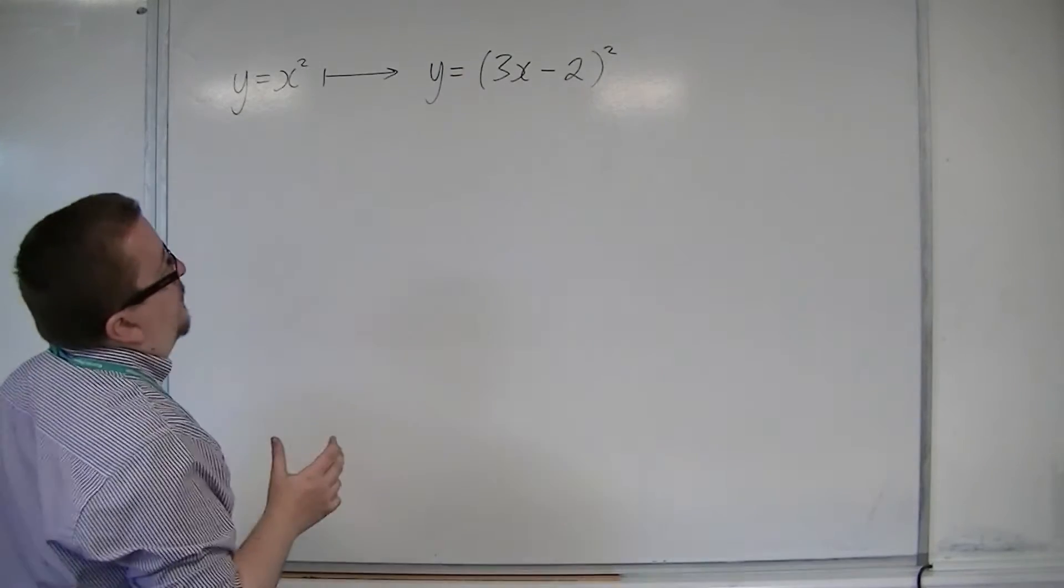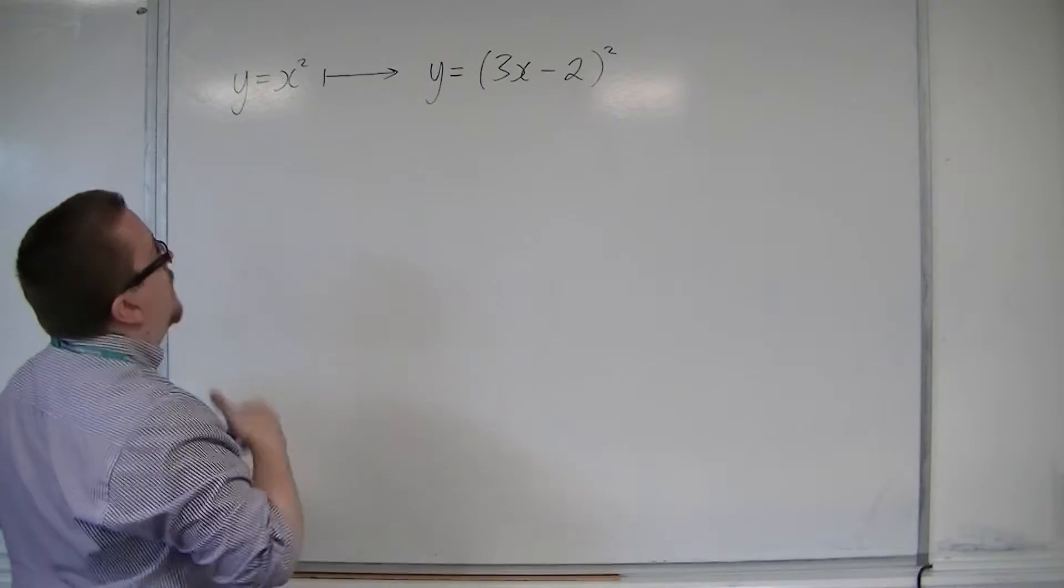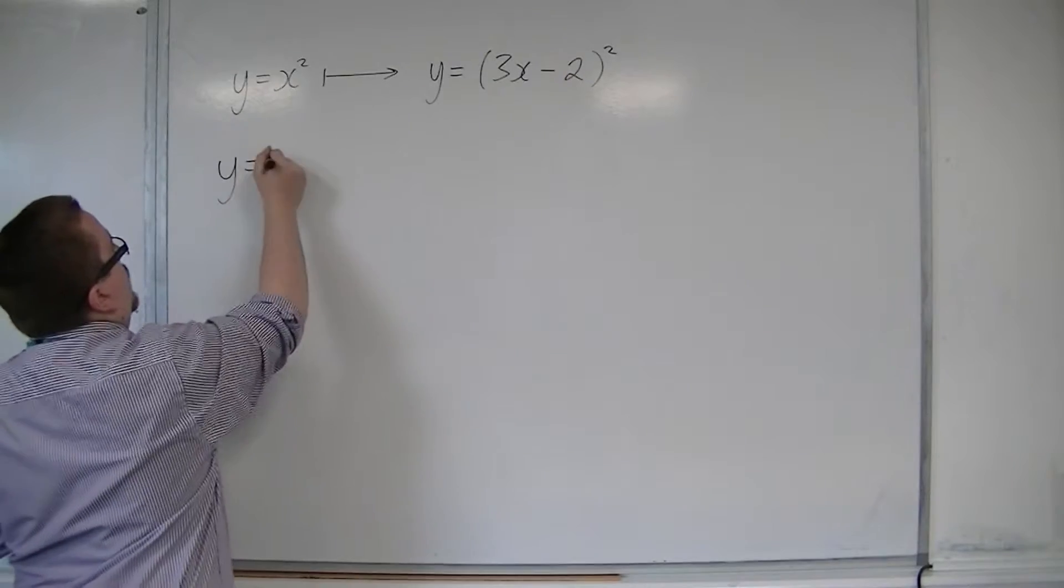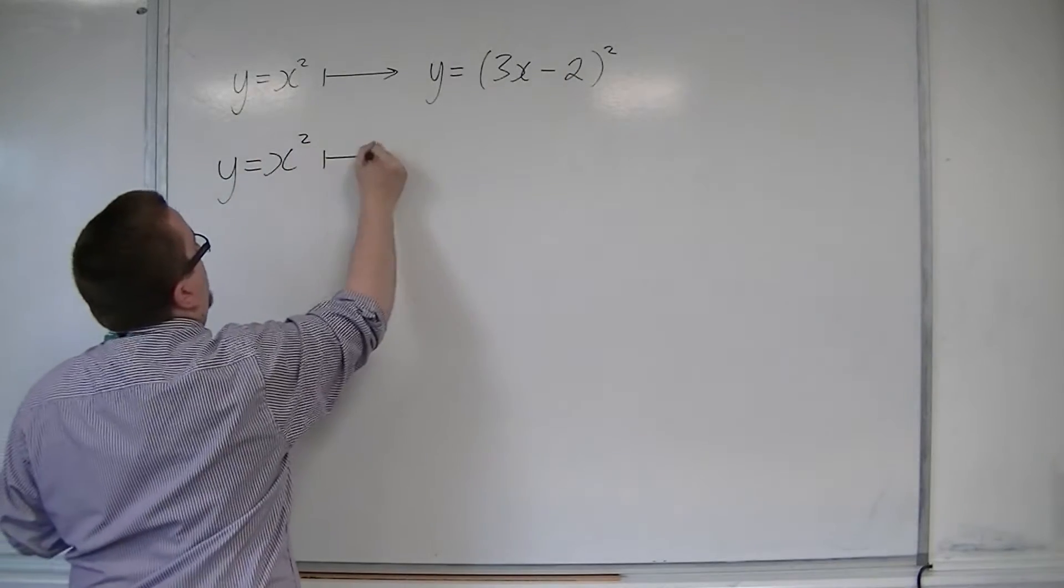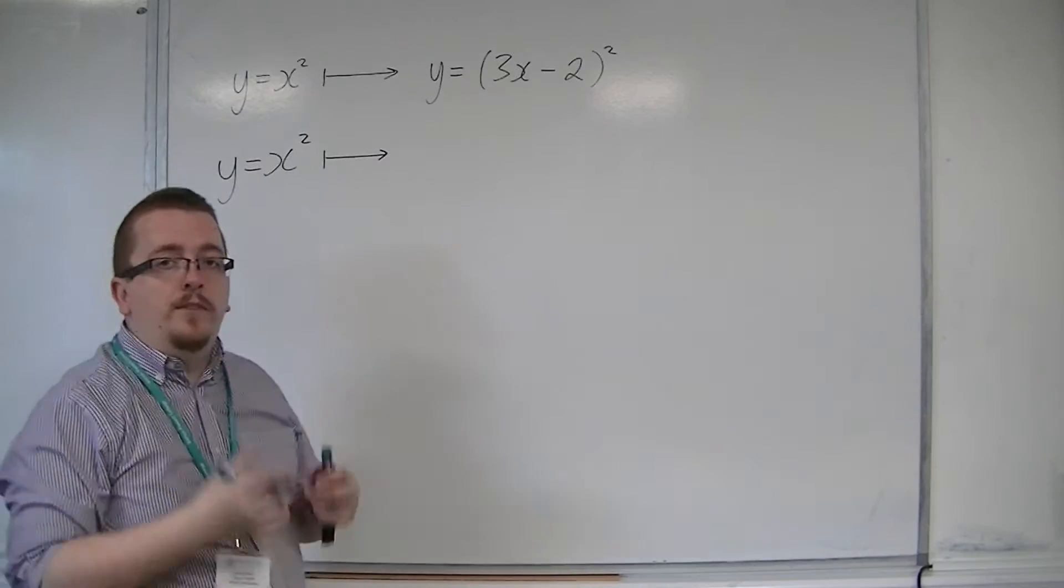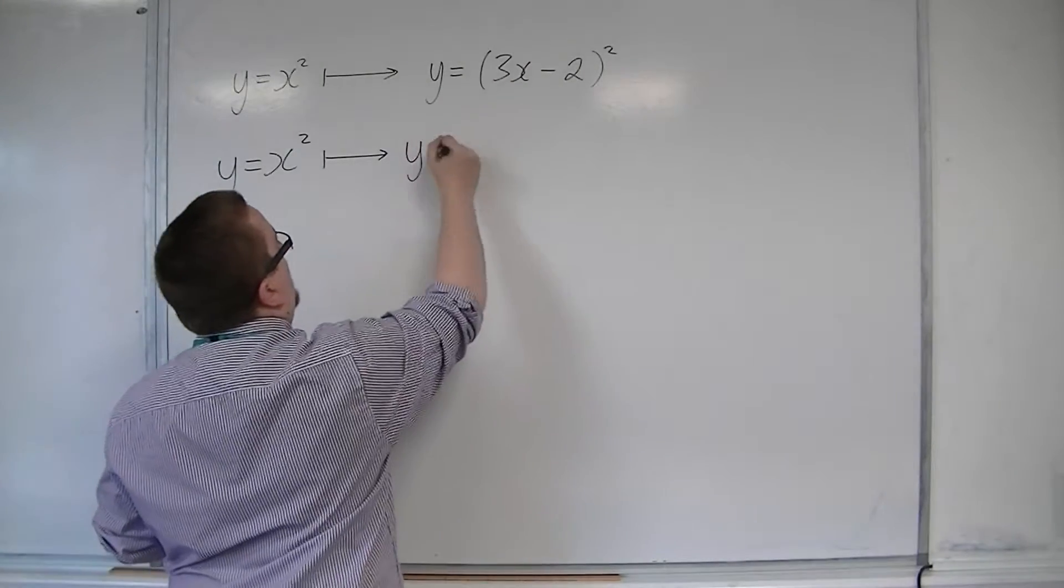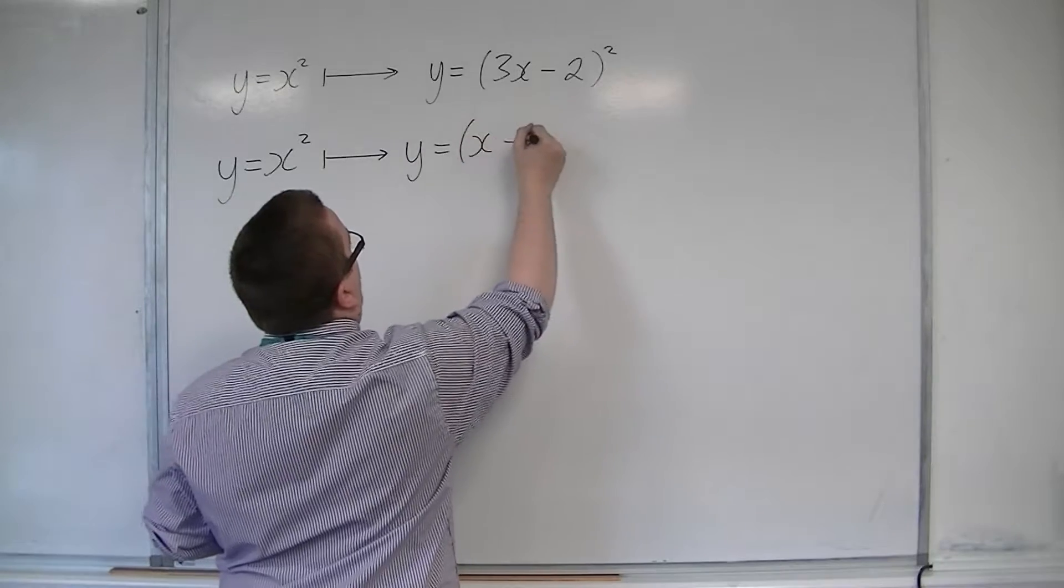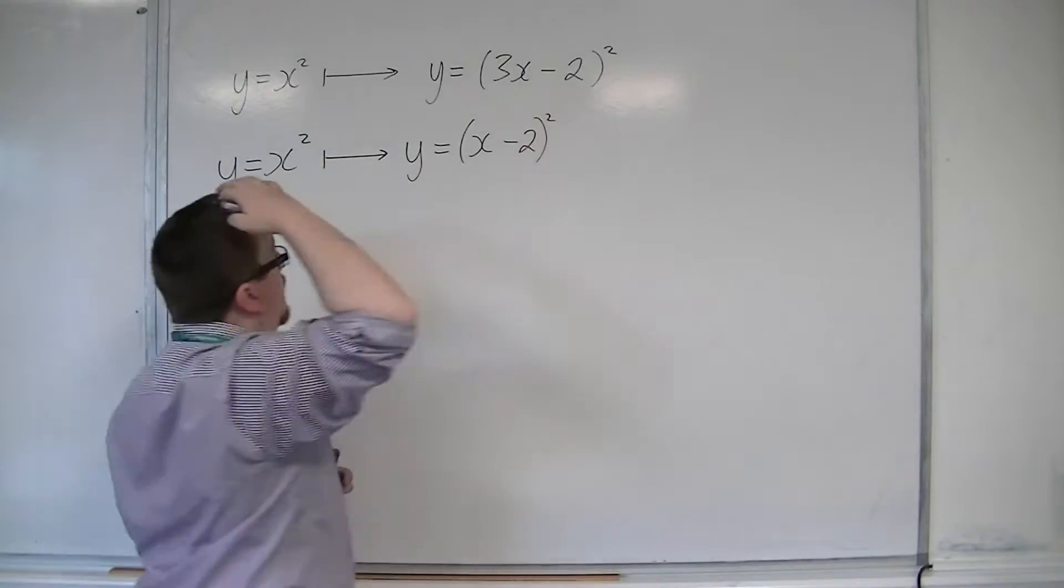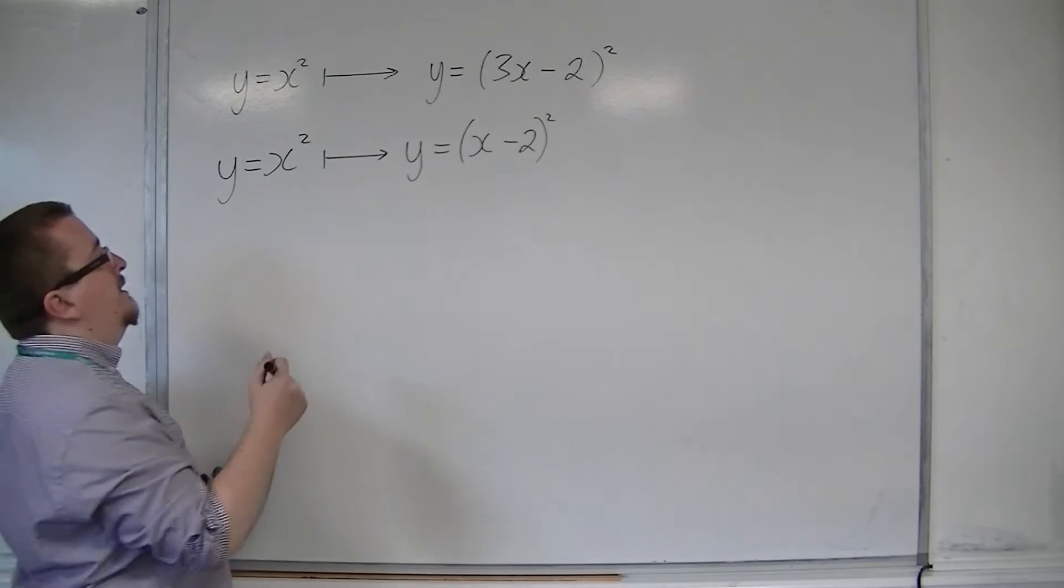First thing you might do is think, I could do a translation first by the vector (2, 0). So that would get me to y = (x - 2)². So that's a translation by the vector (2, 0).